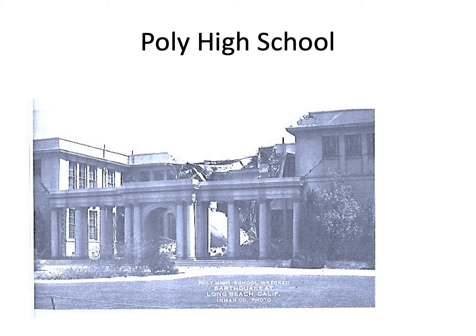Despite earlier damaging earthquakes in California, such as San Francisco in 1906 and Santa Barbara in 1925, building codes and other regulations did not reflect the dimension of the problem. Looking back over the last two centuries, there are many examples of severe quakes along the region's major fault lines. The difference is that in 1857, when a major earthquake struck along the San Andreas Fault, California's population was quite small and there were no large cities. Since 1933, a major earthquake has struck the state every 10 years.